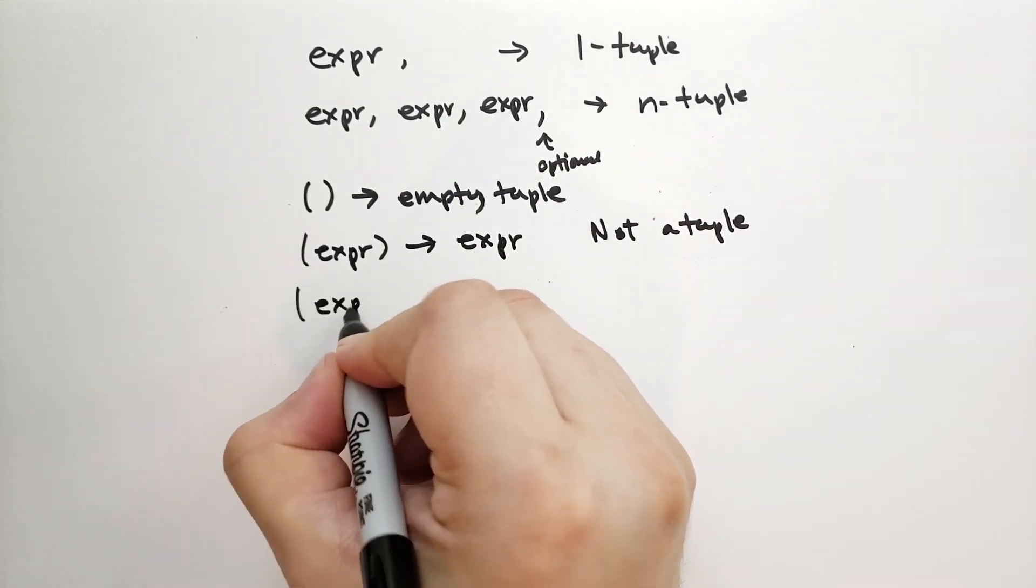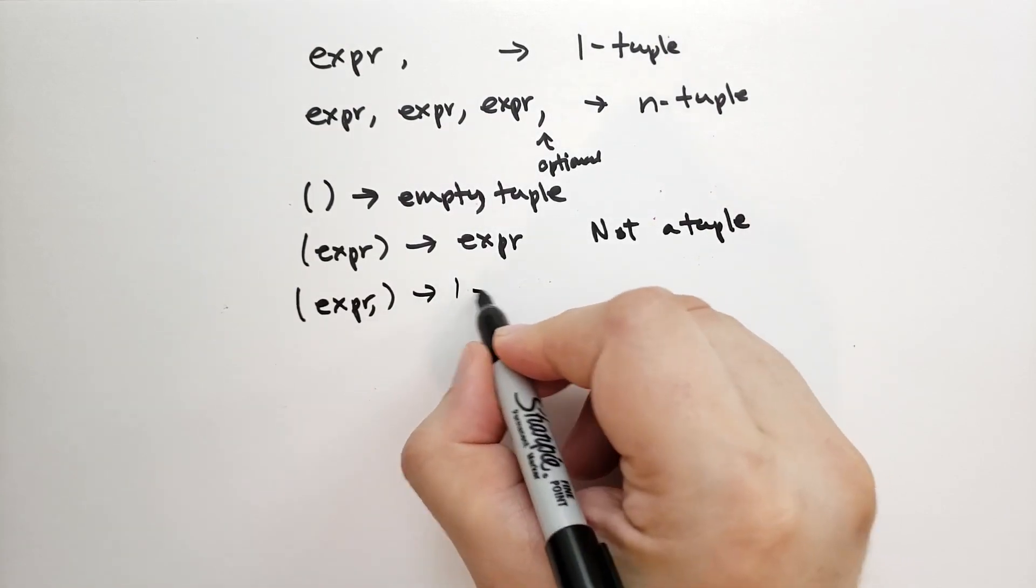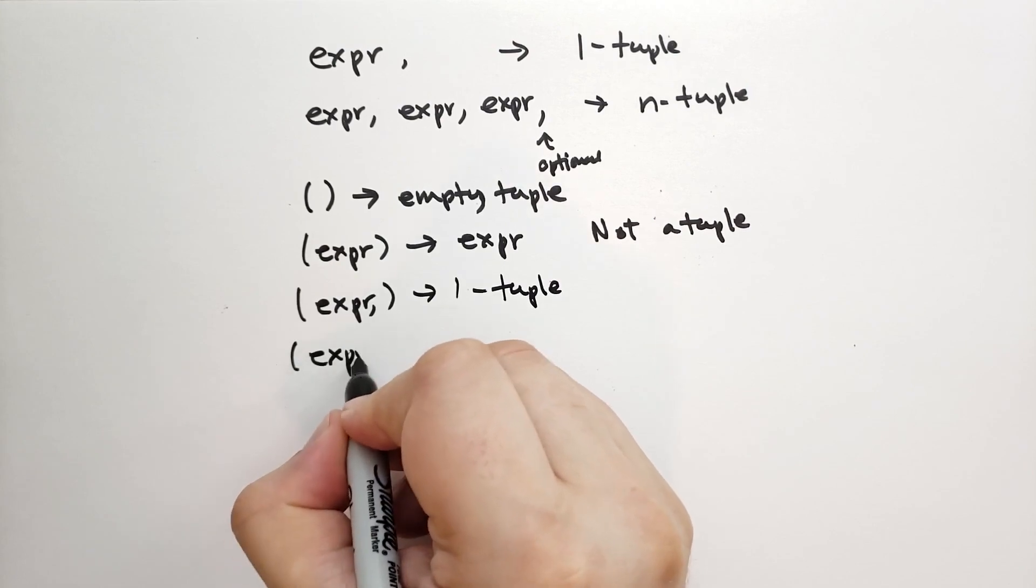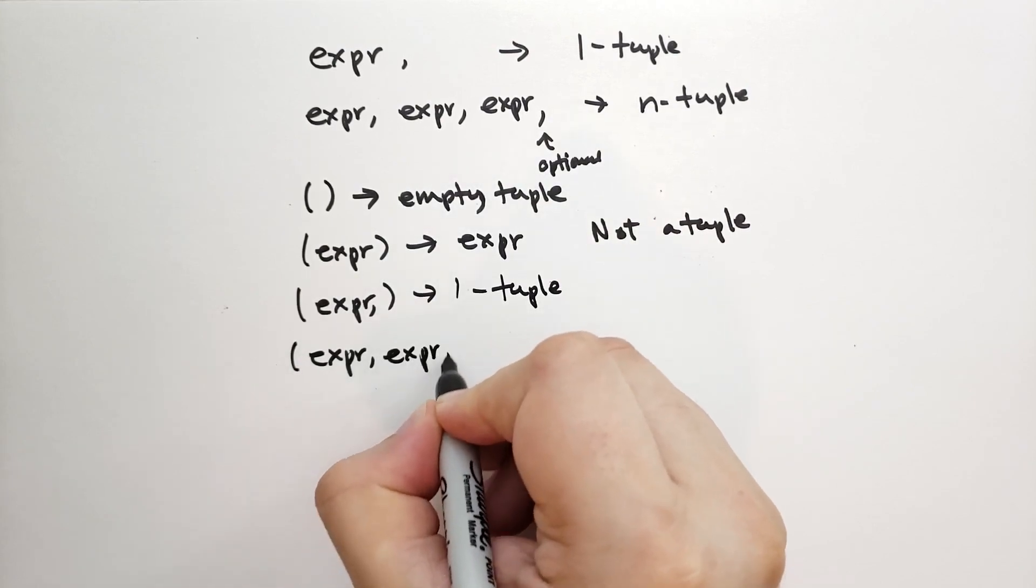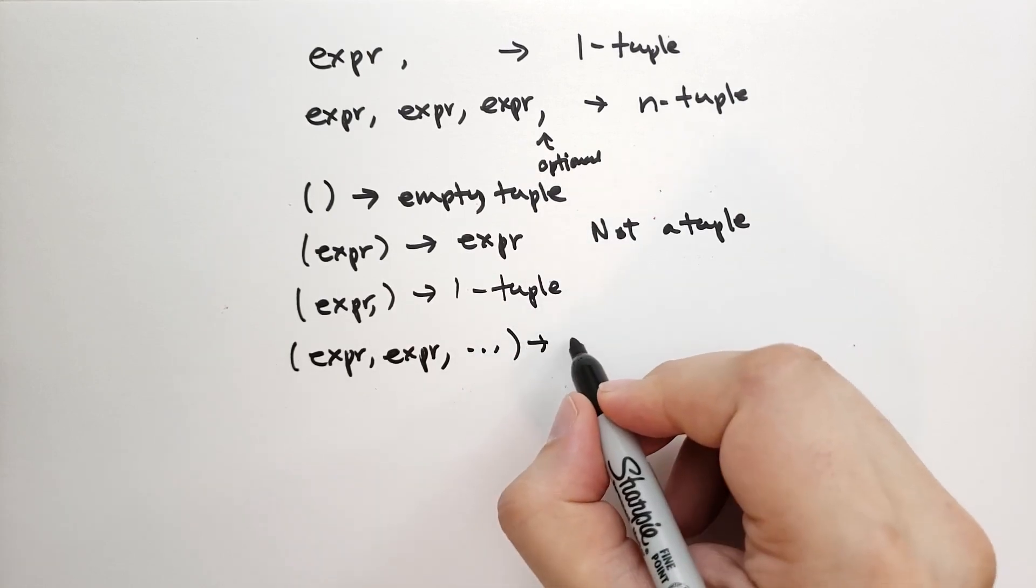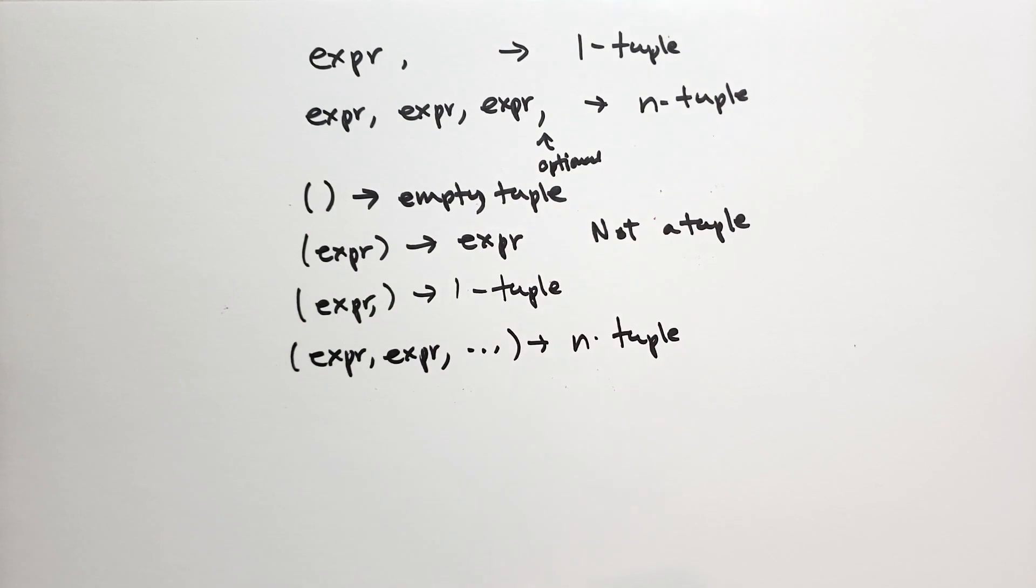But if you were to have inside a parenthesis, an expression with a single comma afterwards, then this is the one tuple again. And you can, of course, have many elements inside the parentheses. Maybe ending with a comma, it doesn't matter. This is the n tuple. Tuple of length of the number of expressions you have there.